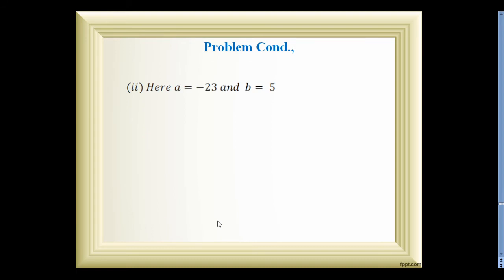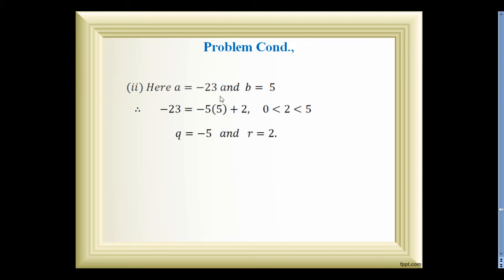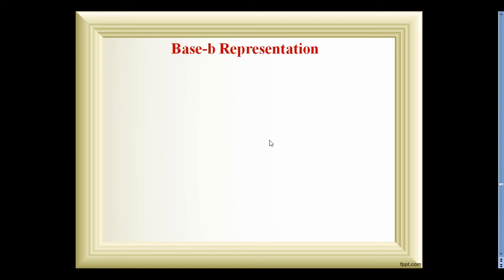For the second problem, a = −23 and b = 5. So −23 can be written as −5 × 5 + 2. The remainder 2 lies between 0 and 5. From this equation, q = −5 and r = 2.